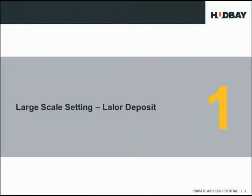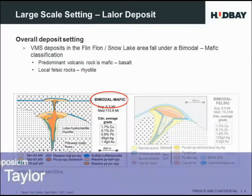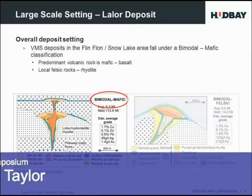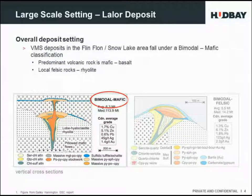I'll start again with the large-scale setting. You've seen this slide — or this is a portion of a slide that Al Galley had earlier. Basically, VMS deposits in the Flin Flon and Snow Lake area are mostly in a bimodal mafic setting, meaning the predominant rock is mafics or basalts. You can see in the diagram on the left: basalts in the footwall, localized rhyolite associated with the massive sulfide mineralization, and then additional basalt on top.